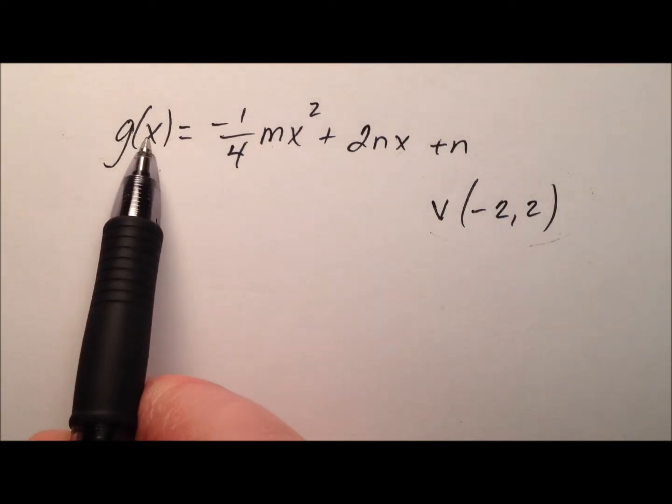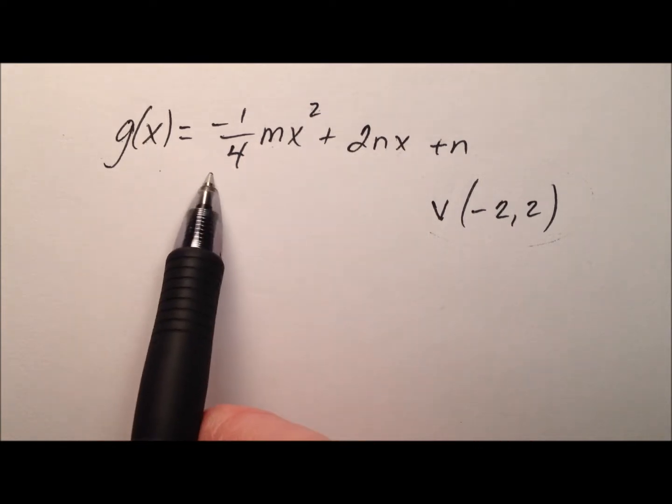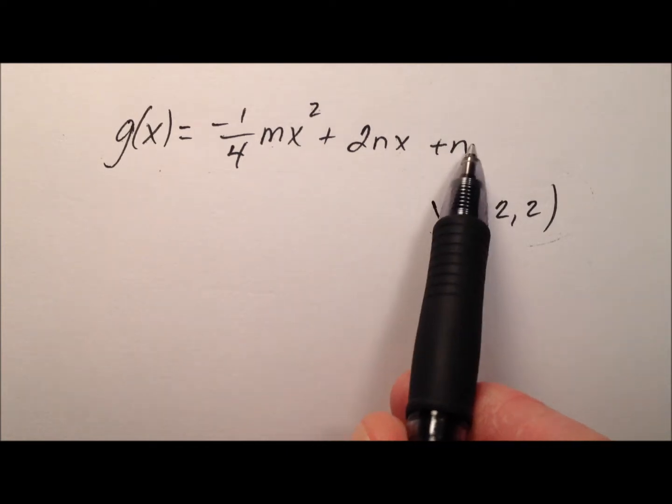So, looking at my function, it looks like x is my independent variable, so here's my x squared and my x, so this is my quadratic term and my linear term, and this plus n is just the constant here.